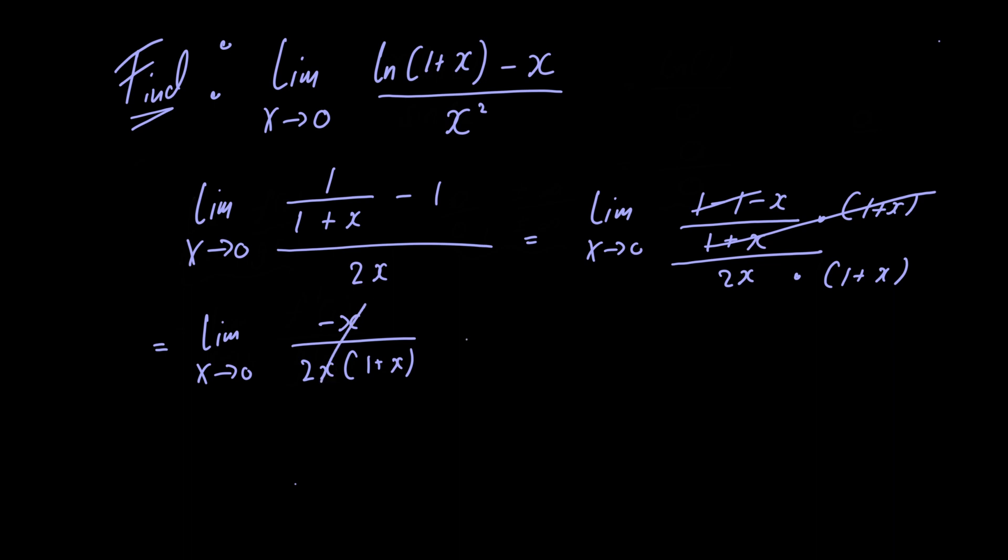Notice here that these two x's cancel and we're just left with the limit as x approaches 0 of minus 1 divided by 2 multiplied by 1 plus x. If we just let x tend to 0 we have minus 1 divided by 2 multiplied by 1 plus 0, and this is simply equal to minus 1 half which is the final answer to this problem.